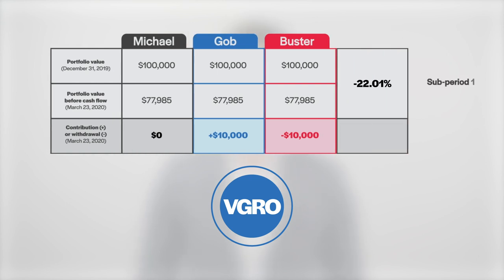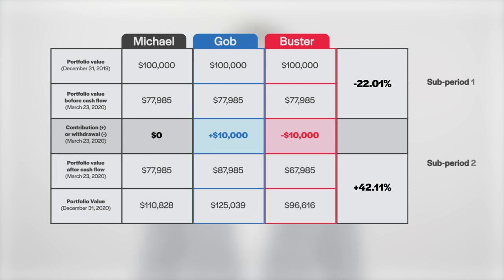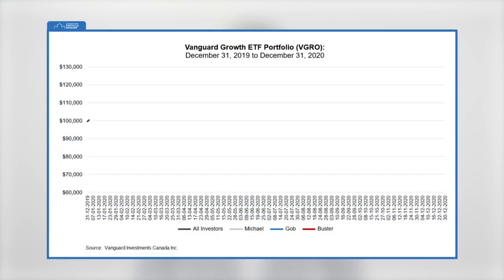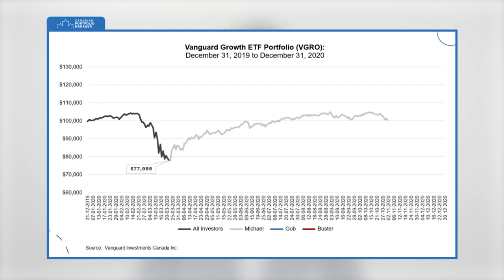All three investors held all of their portfolio in the Vanguard Growth ETF Portfolio, VGRO. All three earned VGRO's disappointing negative 22.01% return in a sub-period from the beginning of the year until the March 23rd cash flow date. Each then earned VGRO's amazing positive 42.11% return during a second sub-period from March 23rd until the end of the year. Ultimately, all three earned VGRO's annual time-weighted rate of return of 10.83%. But even though all three earned the same time-weighted rate of return, chances are they weren't equally satisfied with the results — due to those different cash flow choices each made.